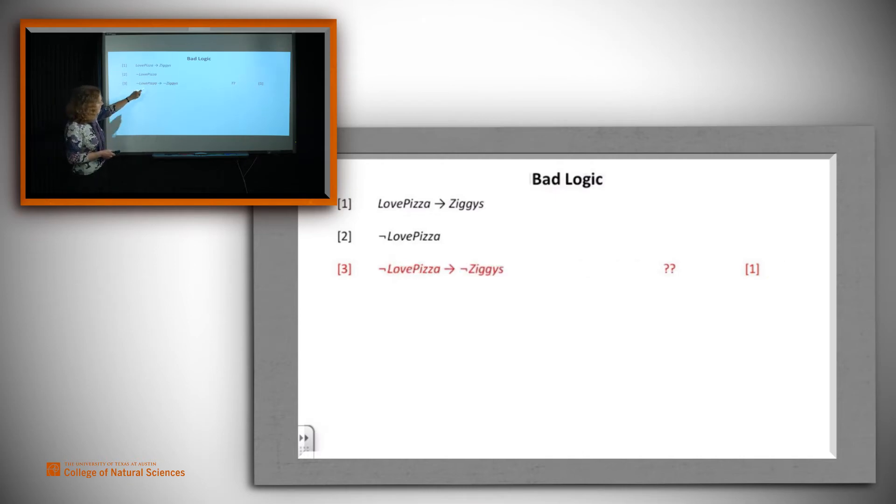What else might have happened? It looks like maybe what they did was to say, well, if we know love pizza implies Ziggy's, maybe we know that not love pizza implies not Ziggy's. I've written question mark here because there's no rule that actually does that, but let's imagine that they did. Well, then they'd get the rest of the proof, right? Because then modus ponens from two and this fictitious three would get us not love pizza implies not Ziggy's. There you go. But this rule is also fictitious. Let's see why.